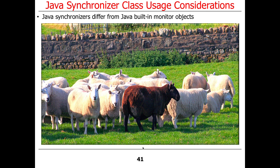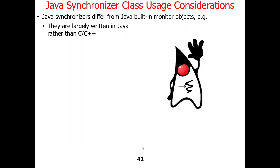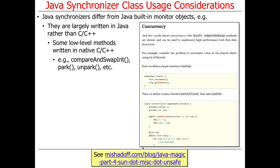We'll talk a lot about those trade-offs and you'll get a chance to play with them. Almost all the classes we just talked about differ from Java built-in monitor objects. Built-in monitor objects are the things that come out of the box in Java with respect to synchronized methods and the wait-and-notify paradigm. Those mechanisms are built-in — they're part of the execution environment, the virtual machine. In contrast, the things we just talked about are at the library level, typically written in Java, whereas the built-in stuff is typically written in C and C++. Some of the low-level mechanisms in the Java synchronizers are written in native C and C++ and accessed via Java Native Interface method calls.